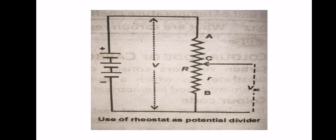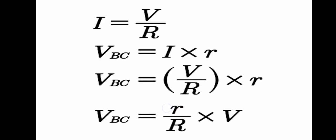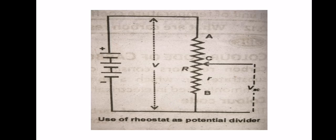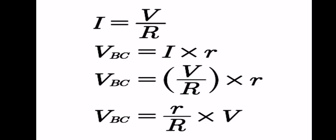As a potential divider: A and B are the fixed terminals. The rheostat is attached to a battery — an external voltage source. The potential difference between terminals A and B is V (capital), and the resistance between A and B is R (capital). So the current flowing through the wire will be I = V/R. When the sliding contact is at point C, the potential difference between point B and C is V_bc, and the resistance between B and C is small r. We can write: V_bc = I × r = (r/R) × V.